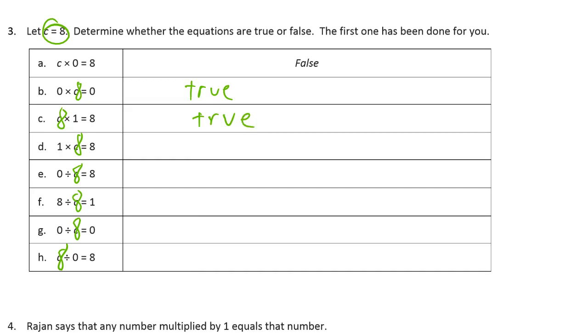1 times 8 equals 8. That's the same thing, really, except commutative property of the same equation we had above. Okay, true.